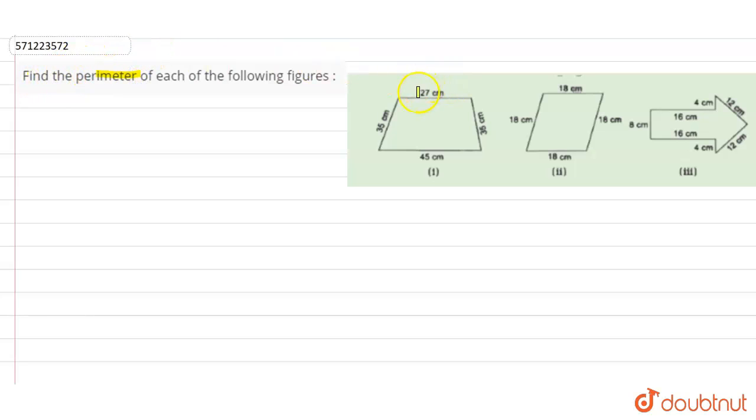have to find the perimeter of each of the following figures one, two, and three. Now, what is perimeter? Perimeter is the sum of all the sides of the enclosed figure.